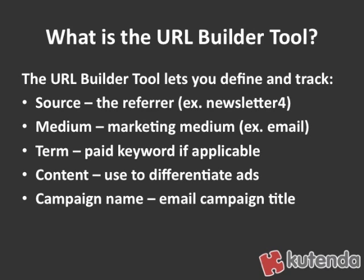So what are those variables? The first one is source — that would be the referrer of the traffic. In the example of a newsletter, you might make the referrer 'newsletter'. The next one is medium, and that would be something like 'email' — that's the marketing medium you're using to promote.